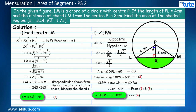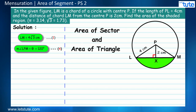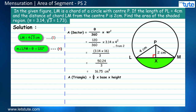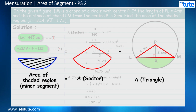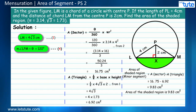We now have theta = 120°. We just need to find the area of the sector and the triangle. Using the right formula and substituting the values, the area of the sector works out to 16.75 square centimeters. The area of the triangle is (1/2) × base × height; substituting the values and the value of √3 gives 6.92 square centimeters. Subtracting the area of the triangle from the area of the sector, the area of the shaded region (minor segment) is 16.75 − 6.92 = 9.83 square centimeters.